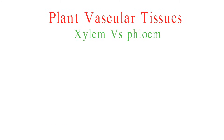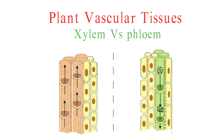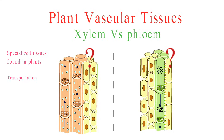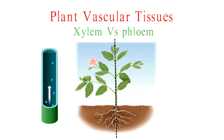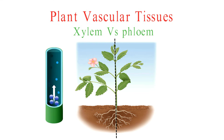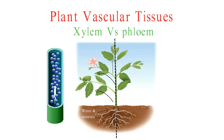Now, let's delve into the differences between phloem and xylem. These two tissues are crucial for a plant's survival. Phloem and xylem are specialized tissues found in plants, responsible for the transportation of essential substances — think of them as the plant's circulatory system. Xylem is like the plant's water highway. It primarily transports water and minerals from the roots to the rest of the plant. These tissues are made up of dead cells with lignin walls, creating a sturdy and rigid structure that helps support the plant.